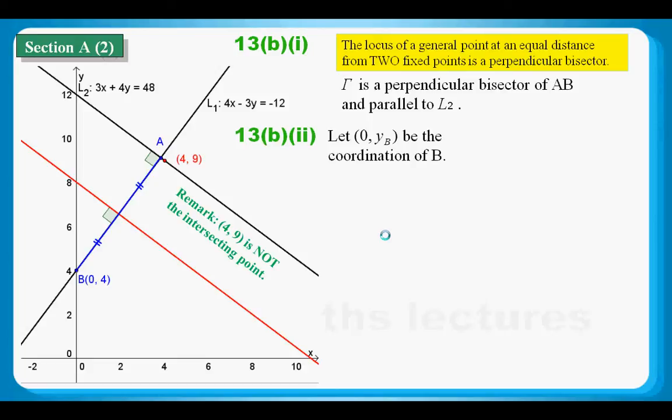So, if I need to find the equation of this gamma, I would use slope point form. Why? Because I already got the slope, because I know the slope of L2 must be equal to the slope of gamma. And actually, I got two ways, and I will show you.